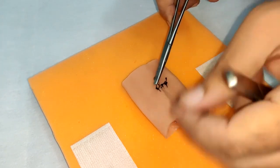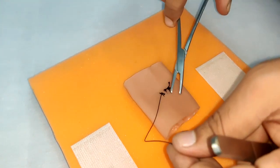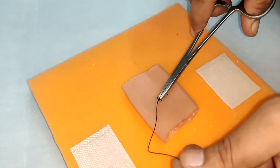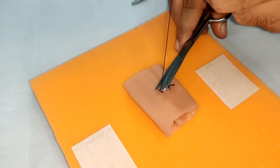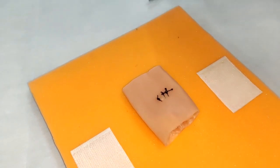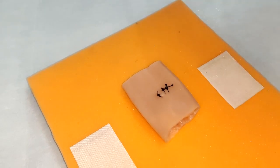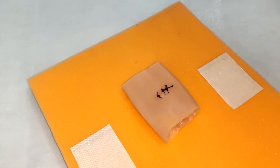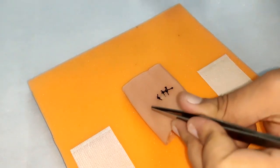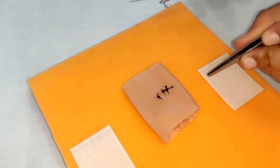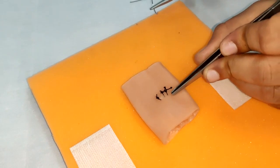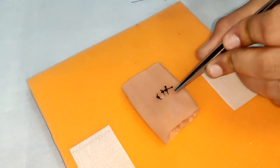Be it any intestinal perforation or gastric perforation, we have to always suture it perpendicular to the axis of the bowel. Another advantage is that there is less compromise of the blood supply because the blood supply will come from the mesentery and will traverse perpendicular to the axis.